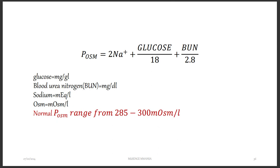We already talked about the equation for calculating plasma osmolarity — which is just the concentration of plasma, the liquid part of blood. Plasma osmolarity is given by: 2 times the concentration of sodium, plus glucose over 18, plus blood urea nitrogen over 2.8. The normal plasma osmolarity is between 285 to 300 milliosmoles per liter.